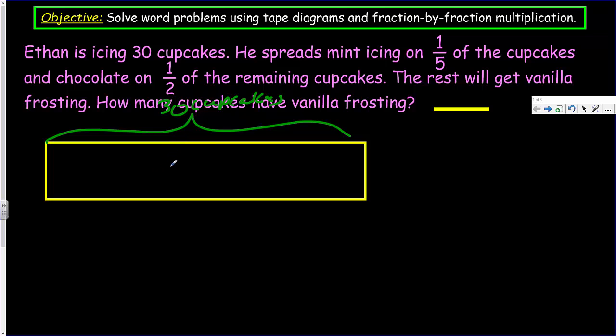Now it says that he spreads mint icing on one fifth of the cupcakes. Okay. So that is how much we know. What we could do, we could actually divide this into fifths, right? We could show one fifth. And if this is one fifth here, then I could actually say, well, let's say that's about two, three, four, and five.